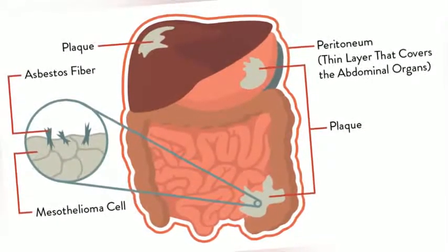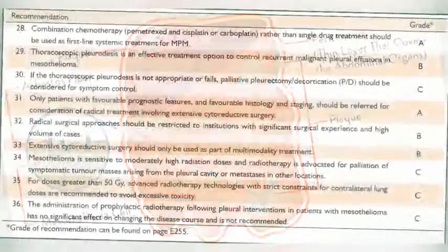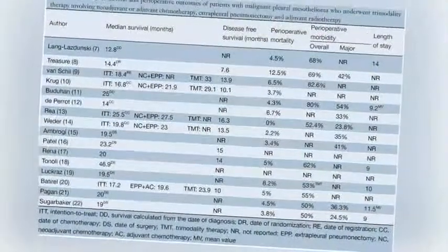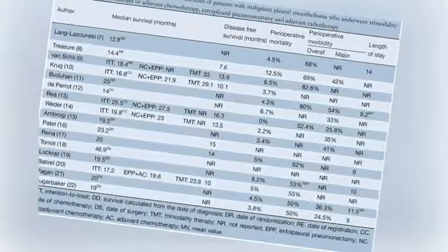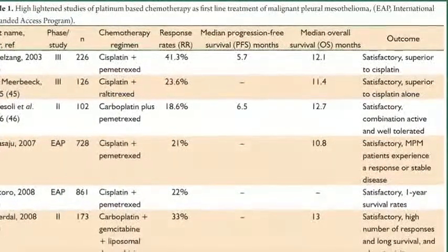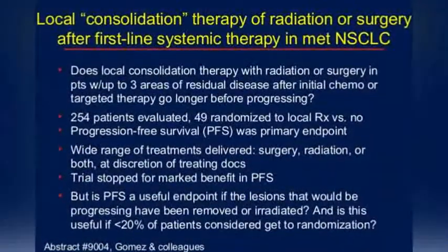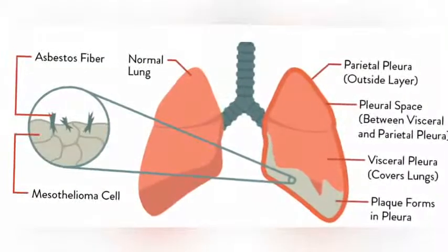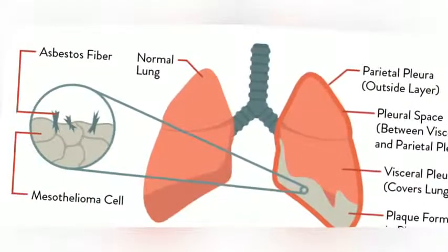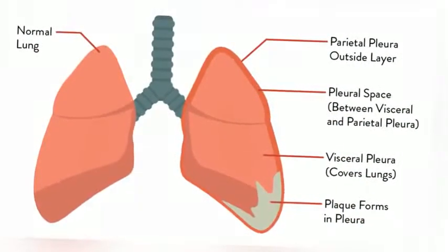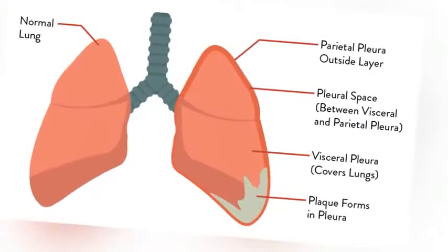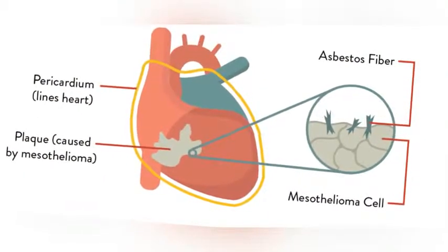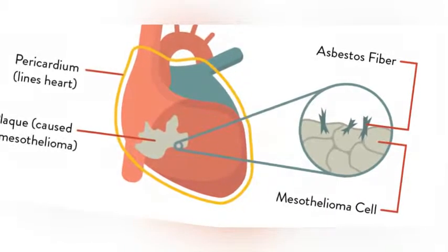The mesothelium consists of a single layer of flattened to cuboidal cells forming the epithelial lining of the serous cavities of the body, including the peritoneal, pericardial, and pleural cavities. The position of asbestos fibers in the parenchyma of the lung may result in the penetration of the visceral pleura, from where the fiber can then be carried to the pleural surface, thus leading to the development of malignant mesothelioma. The processes leading to the development of peritoneal mesothelioma remain unresolved, although it has been proposed that asbestos fibers from the lung are transported to the abdomen and associated organs via the lymphatic system. Additionally, asbestos fibers may be deposited in the gut after ingestion of sputum contaminated with asbestos fibers.